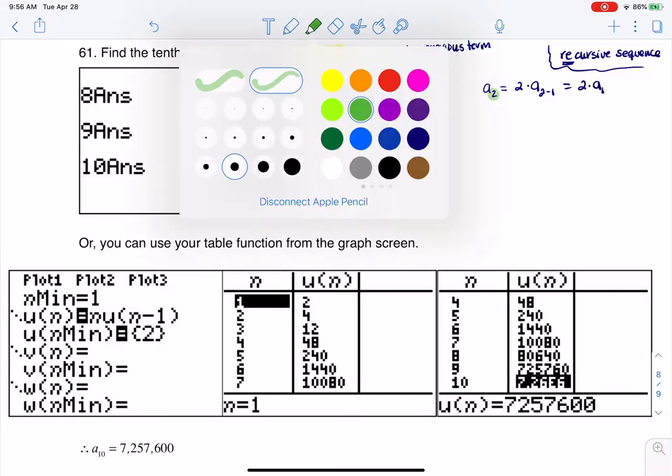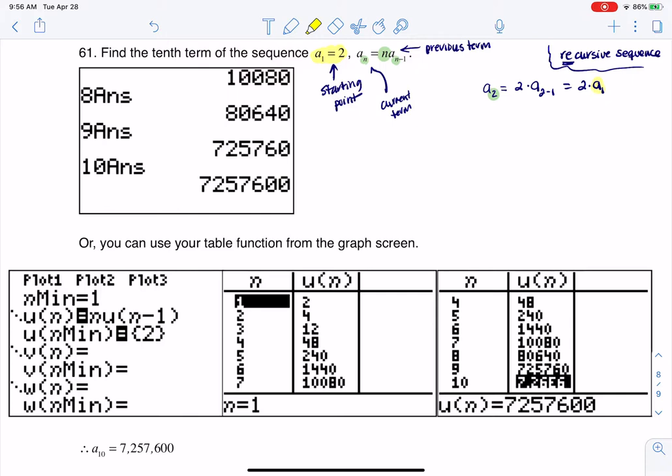But keep in mind, we knew a sub 1, right? We were given it. We had to have a starting point. We were told it was 2. So this is 2 times 2, which is 4. Okay, so if we start to keep track, my first sequence term was 2, my next one was 4.